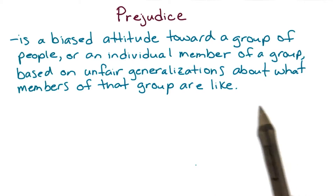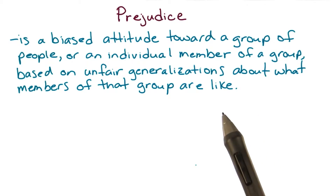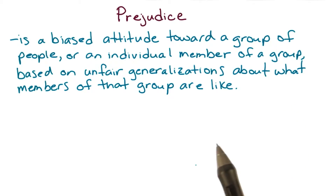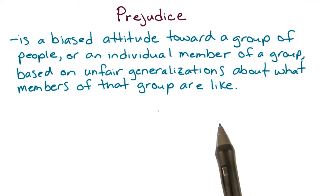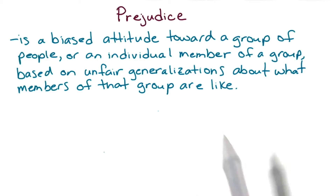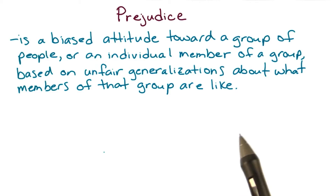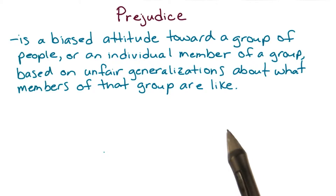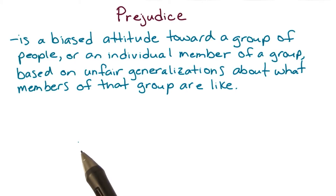Prejudice is a biased attitude toward a group of people or an individual member of a group based on unfair generalizations about what members of that group are like. Such prejudicial thinking is often the result of stereotypes instead of resulting from a careful observation of people's behavior.